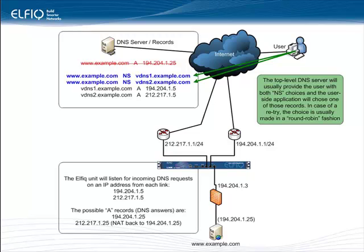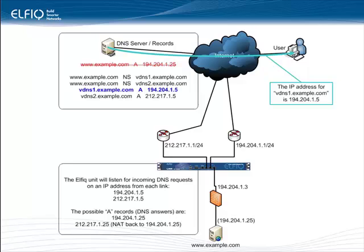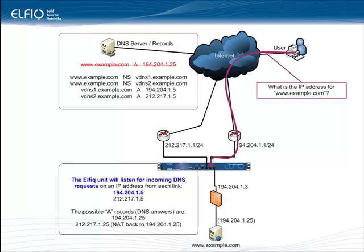In case of a retry, the choice is usually made in a round-robin fashion. So the user has chosen to ask the question to vdns1 but needs to know its IP address. The user asks the externally hosted DNS service: what is the IP address for vdns1.example.com? The answer is 194.204.1.5. The user then asks: what is the IP address for www.example.com? And that DNS request goes to 194.204.1.5.